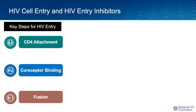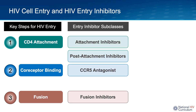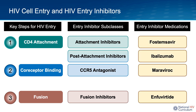In summary, I've reviewed the three main steps involved in HIV entry — CD4 attachment, co-receptor binding, and fusion — and the corresponding four subclasses of HIV entry inhibitors: attachment inhibitors, post-attachment inhibitors, CCR5 antagonists, and fusion inhibitors. I've also reviewed the four HIV entry inhibitors, one for each subclass. I hope this overview has provided you with some insights on the HIV entry inhibitor class of medications. Thank you.